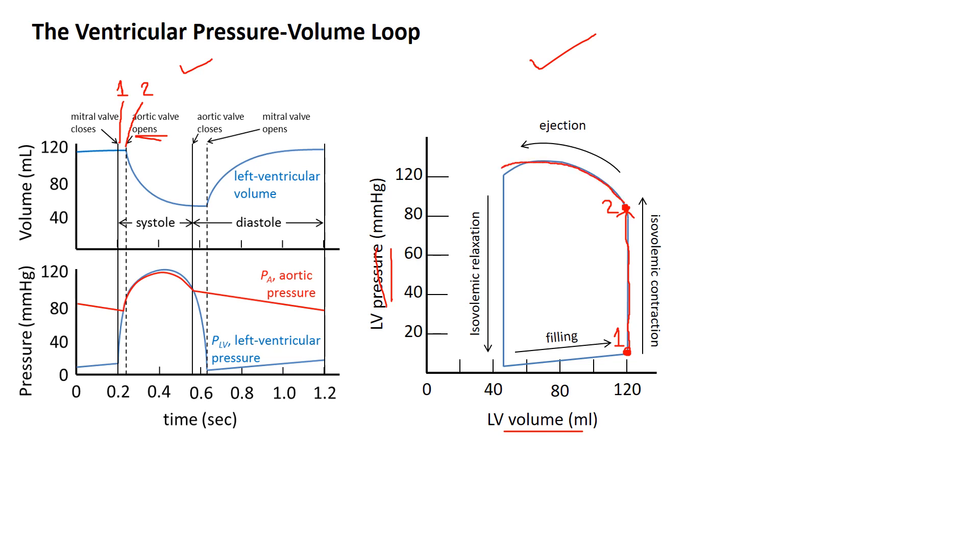Volume's going down, and when volume's going down, that phase is called ejection because the blood is being ejected out into the arteries, into the aorta. Ejection ends when the aortic valve closes. It's here on the right, here on the left.